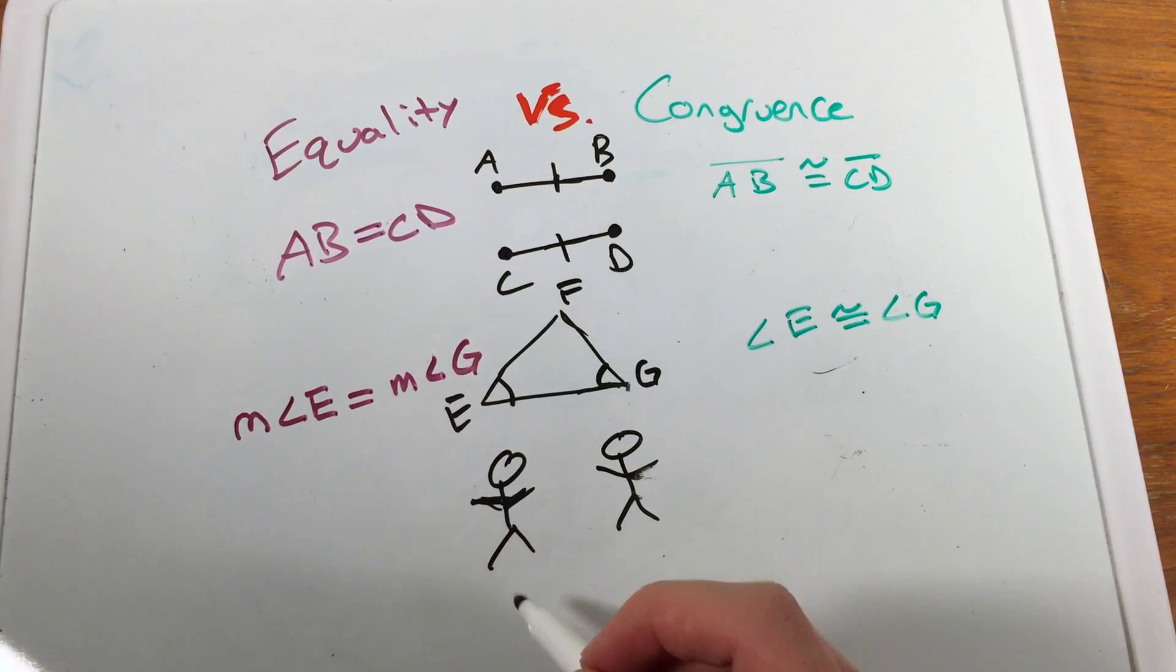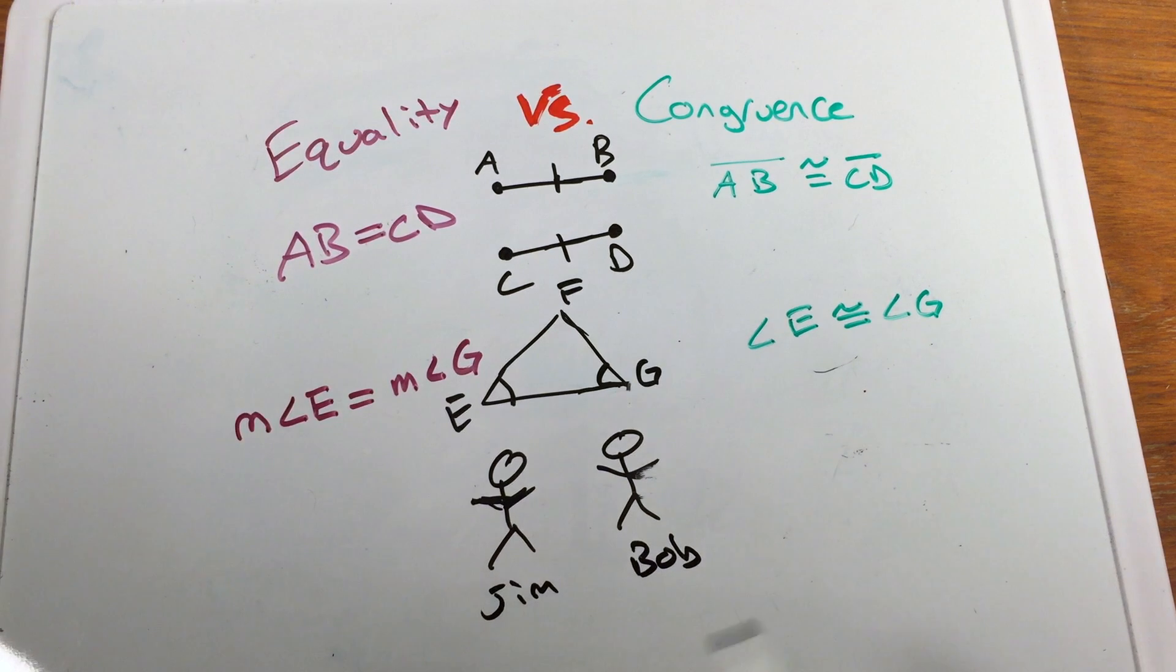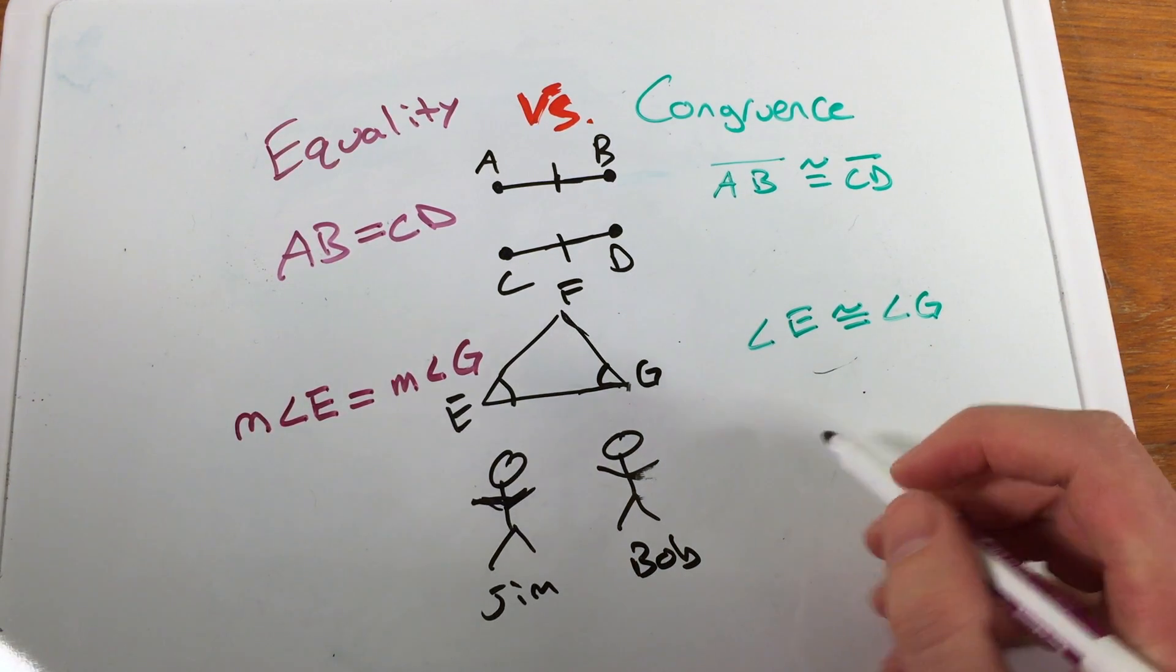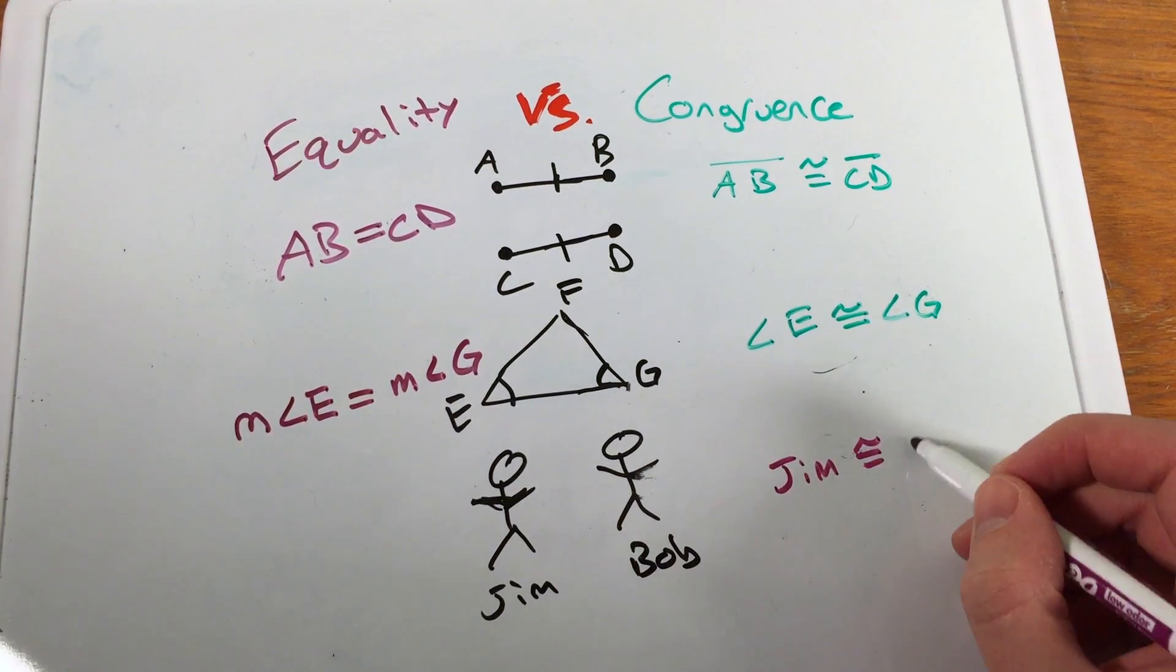Let's call them Jim and Bob. Jim and Bob, they are congruent in a sense that they look similar, but they're not the same person. We cannot say that Jim and Bob are equal, but we could say maybe they're congruent, referring to their shape, the size and shape, so that Jim is congruent to Bob.